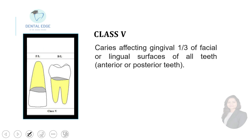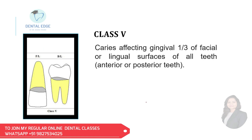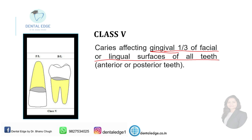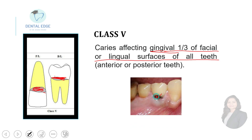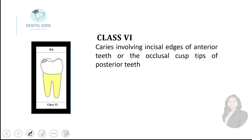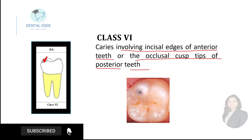Now let's see what is class five. Class five is caries affecting the gingival one-third of the facial or lingual surfaces of all teeth — either anterior or posterior. Class six is caries involving the incisal edges of anterior teeth or the occlusal cusp tip of any posterior teeth. Here are examples of caries involving the occlusal cusp tip of a molar.